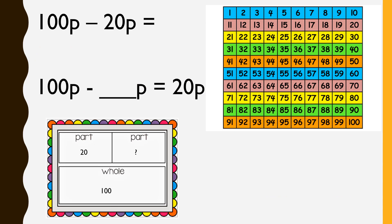To find out the answer, we could have 100 take away 20p and it will give us the answer, or we could have 100 take away something equals 20p. I've got two strategies on screen: we've got our 100 square and we've got our part, part, whole. It's up to you what you'd rather use to help you.